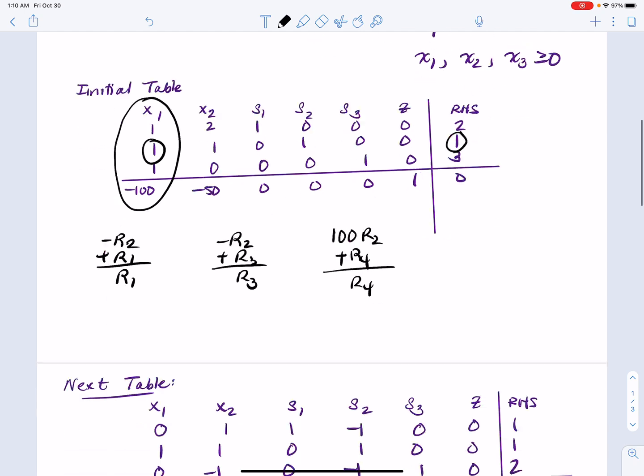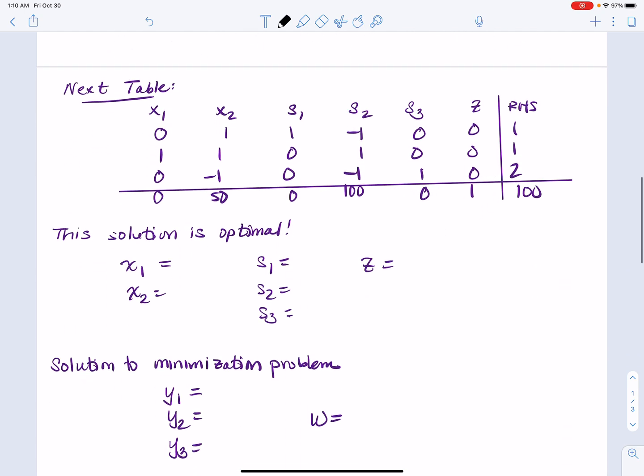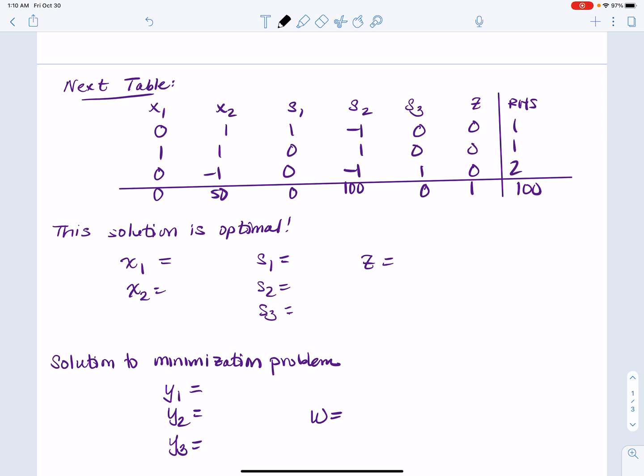And then once you're done with all of that, this should be your new tableau. And you notice this solution is optimal because there's no negative entry in the bottom row. So this is good news. But now the question is, how do we read this? And more importantly, how do we get back to the minimization problem? It's actually kind of interesting how it all works out.